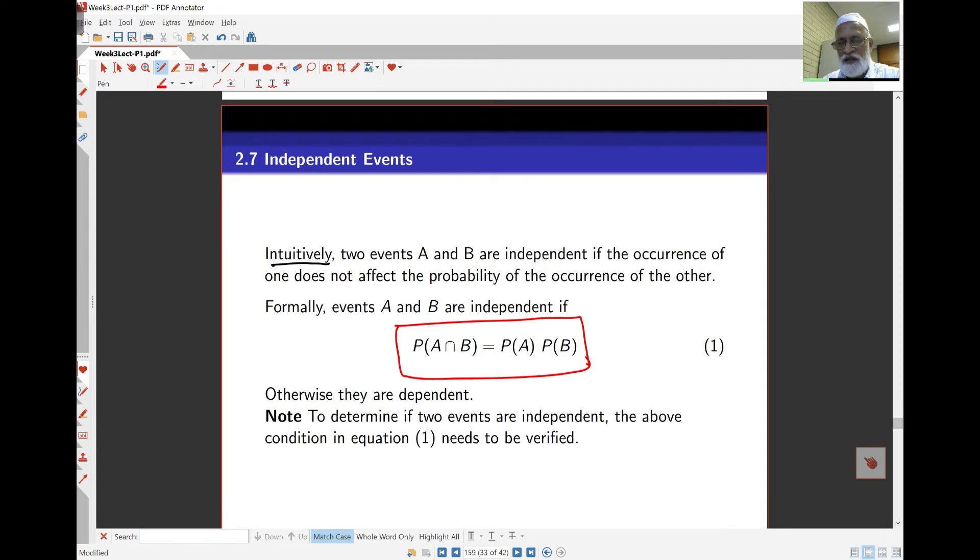Independent events are very important in probability and statistics. Intuitively, we'd think that two events are independent if the occurrence of one doesn't affect the occurrence of the other.